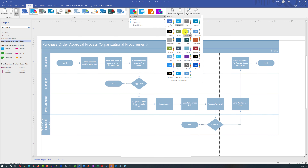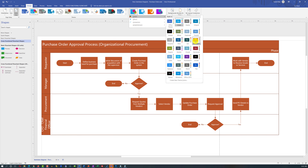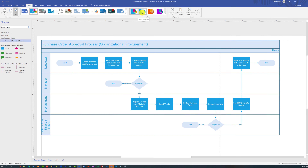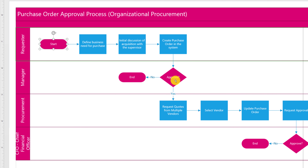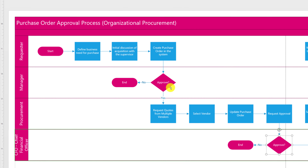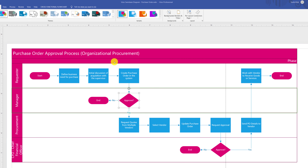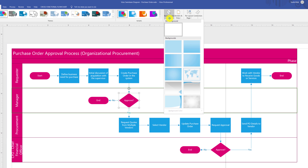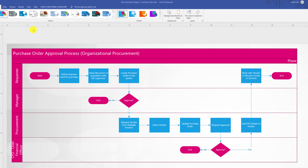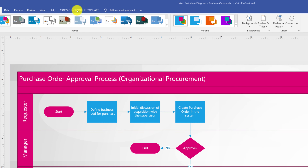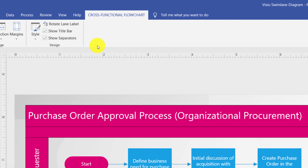I like the second variant as it provides calmer colors. When you change the theme, notice the start shape and decision diamonds are painted in different colors — this highlights their importance. In addition to themes, Visio lets you change the background by uploading your own image or selecting from pre-built images. When using the cross-functional flowchart template, Visio also adds an additional tab specific to that diagram type.